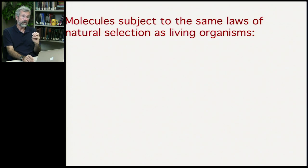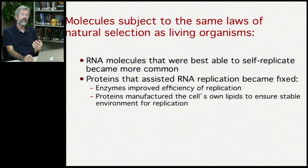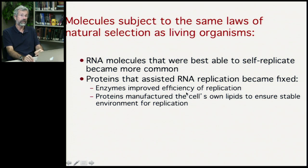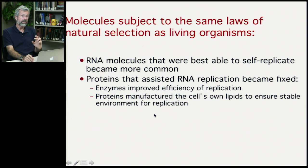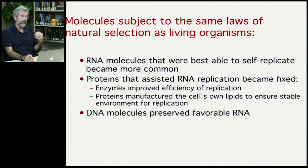To summarize: the molecules in the early stages of life would have been subject to the same laws of natural selection as living organisms. RNA molecules that were best able to self-replicate would have become more common. Proteins that assisted the RNA in replicating itself became fixed — enzymes specifically there to improve the efficiency of replication. These proteins were also co-opted into manufacturing cell lipids to ensure a stable compartment for further replication. Then, with the origins of DNA, all of these very complex phenotypic traits could be very accurately copied from one generation to the next.